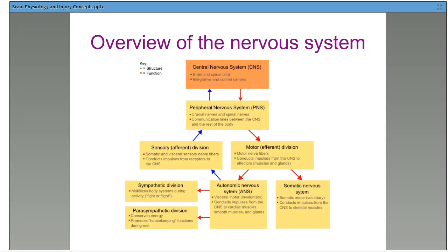We throw the nervous system up like this, but in reality each organ we look at, each system we look at, has sitting alongside it the nervous system, the immune system, and the endocrine system. So when we look at the heart, there are endocrine, nervous system, and immune system effects. When we look at the lungs, the same thing — kidneys, whatever. So having to show you the nervous system is like showing you all of the organs of the body.